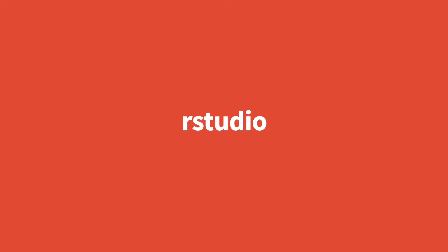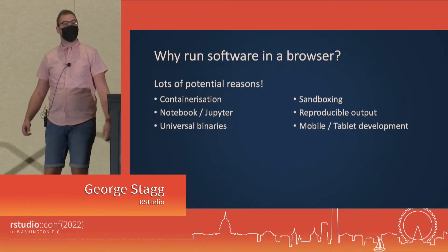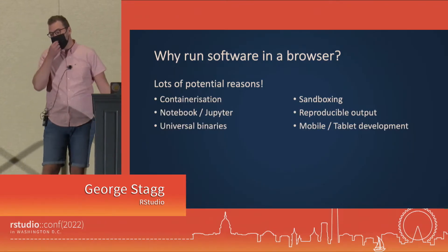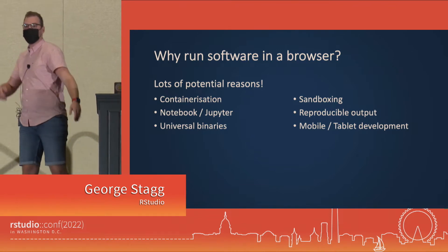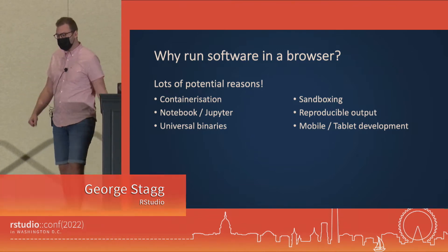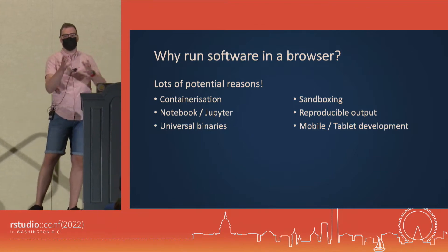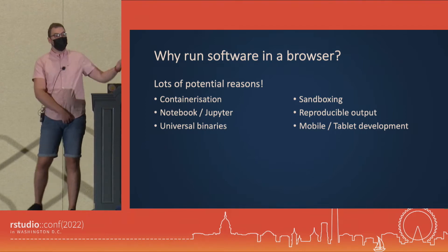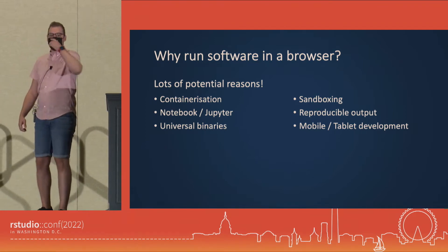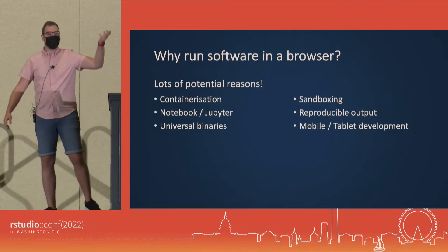WebR is a version of R compiled to run in a browser. You might want to use the containerization or sandboxing abilities of a browser. You might want to run literate programming type things where you weave software and documentation together into a single object or even reproducible output. You might have some data science you want in a nice package that is online. Or you might just be interested in universal binaries — the idea of running a piece of software on lots of different machines that could even be mobile phones or tablets.